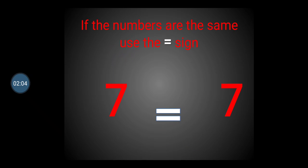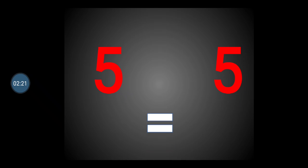If the numbers are the same, use the equal to sign. Like 7 is equal to 7. No number is bigger or smaller — they both are the same. So, we will be using the equal to sign. 5 equals to 5.